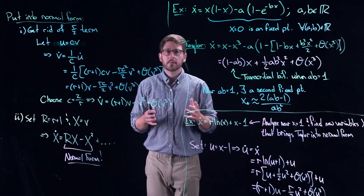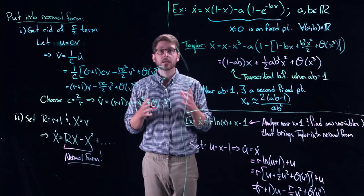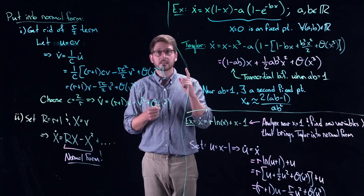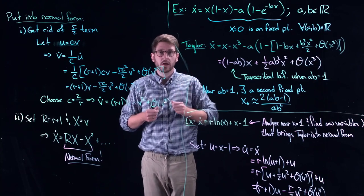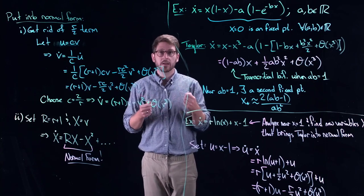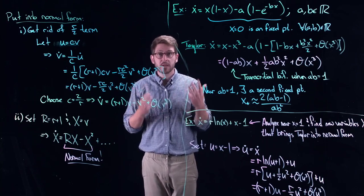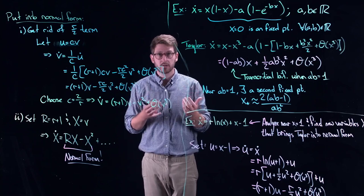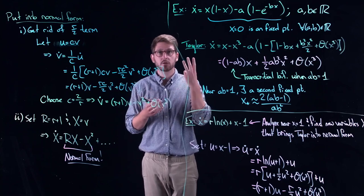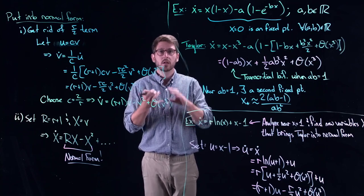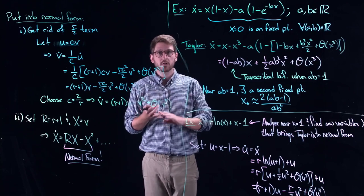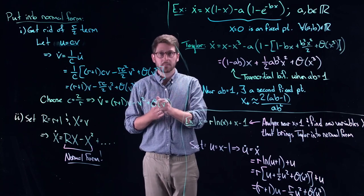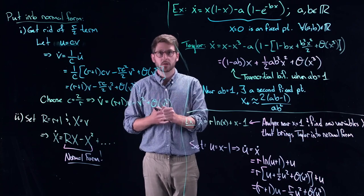In the next video we're going to come back and look at the last type of bifurcation we'll analyze: the pitchfork bifurcation. That'll give us three in total — the saddle node, the transcritical, and next up, the pitchfork.